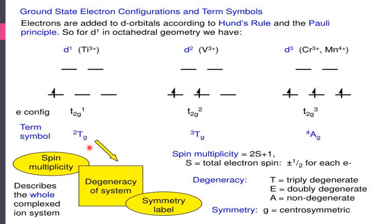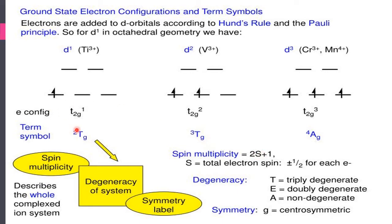The term symbols for these configurations are 2T2g, 3T1g, and 4A2g. These term symbols vary with their degeneracy, spin multiplicity, and symmetry label. The 'g' label remains the same throughout because we are using octahedral geometry, which has a center of symmetry — the sign remains unchanged upon rotation. The spin multiplicity is given by the formula 2S+1, where S is the total electron spin. For d1, with one electron, S = 1/2, so 2(1/2)+1 = 2.